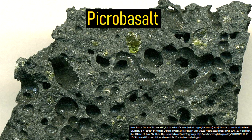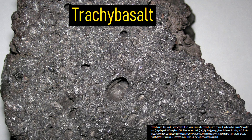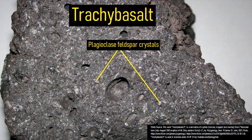In comparison, picrobasalt or picrite basalt is a less silica-rich rock which contains more green olivine crystals, typically making up at least 20% of the rock. Trachybasalt contains both white colored rectangular plagioclase feldspar crystals and orange-pink alkali feldspar crystals, although the former are not always visible as large crystals.